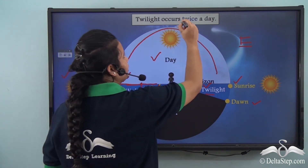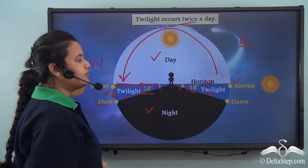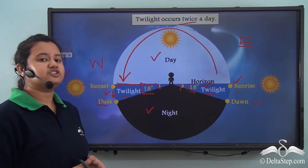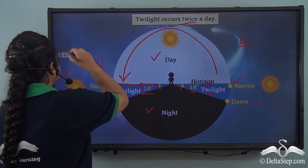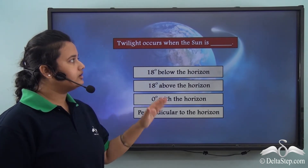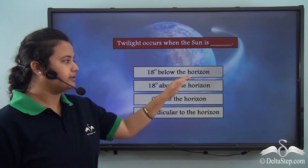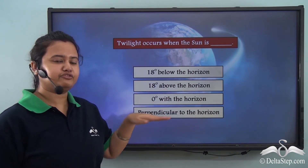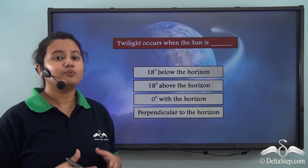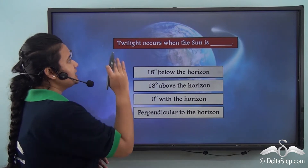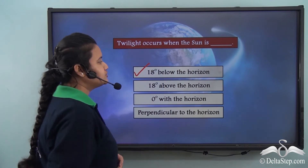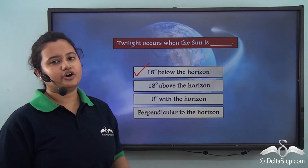Twilight occurs twice a day — once in the morning just before sunrise and once in the evening just after sunset. Now, before we proceed with our lesson, let us answer this: twilight occurs when the sun is 18 degrees below the horizon, 18 degrees above the horizon, 0 degrees with the horizon, or perpendicular to the horizon? The correct answer is twilight occurs when the sun is 18 degrees below the horizon.